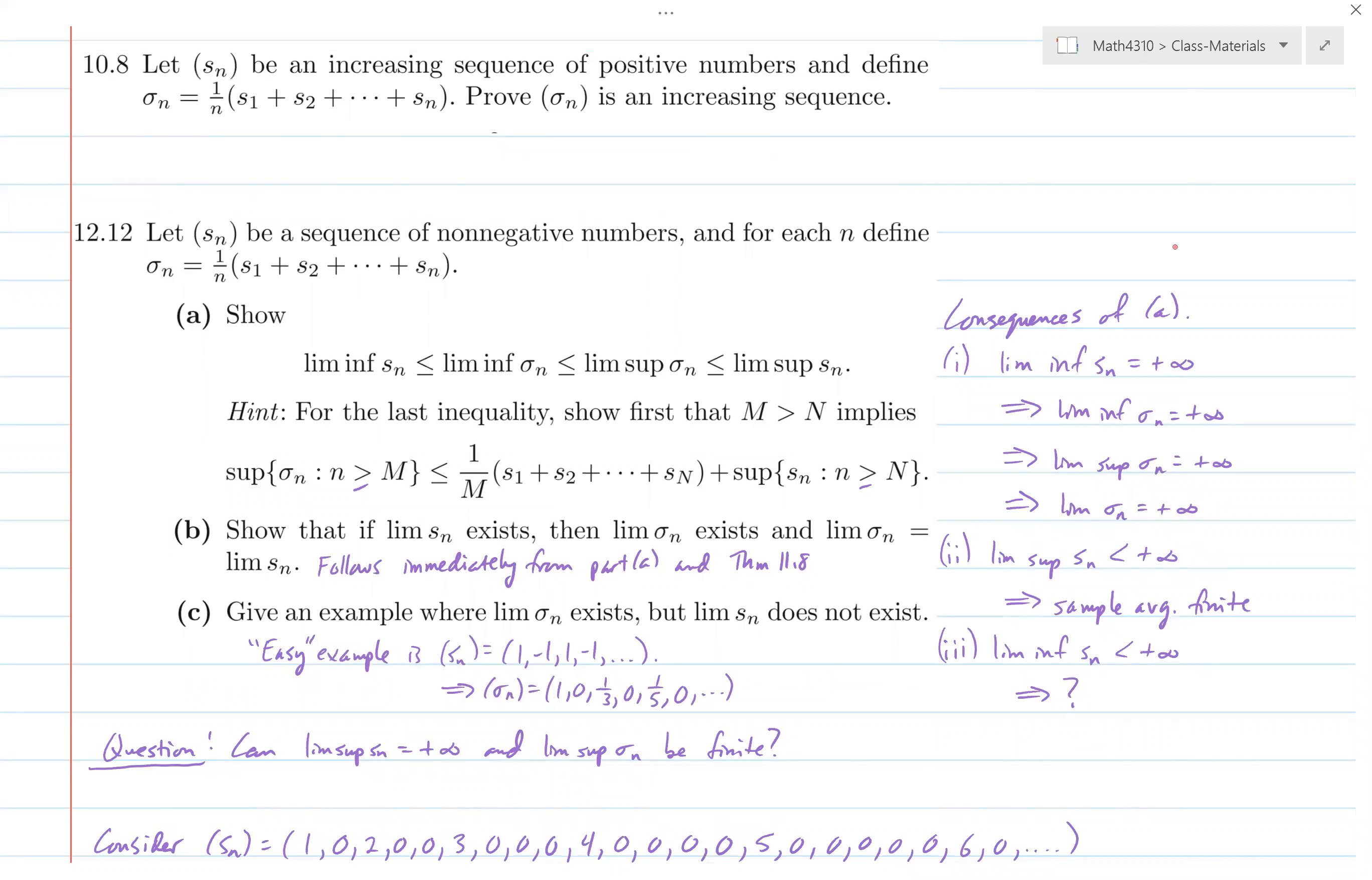But I just want to actually discuss over here some consequences of part A. So one is that if the lim-inf is positive infinity, well then that implies immediately for one that the lim-sup is positive infinity of Sn, because the lim-inf bounds the lim-sup below. This certainly gives them that the lim-inf of sigma n is positive infinity, and so is the lim-sup because of the relationship of the bounds of the lim-inf and lim-sup of sigma n. So that means the limit of the sample average is positive infinity. And this is just also a consequence of part B, but you can see it immediately from part A.